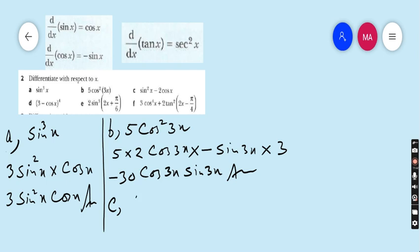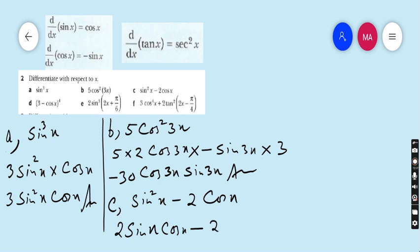Part c: sin squared x minus 2 cos x. The derivative of sin squared x: bring down 2, giving 2 sin x, then multiply by the derivative of sin x which is cos x. For minus 2 cos x, the derivative of cos x is minus sin x, so minus times minus gives plus 2 sin x. The final answer is 2 sin x cos x plus 2 sin x.